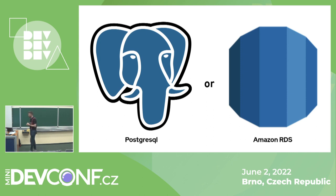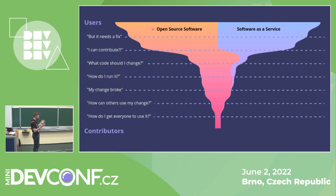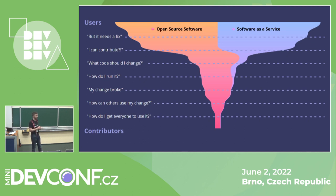This is a problem I'd like to contribute to solving. You can see the diagram here — with open source software, we slowly whittle down the number of participants each time. First you might notice the software is broken, then you figure out you can contribute, then figure out what code to change, how to run it, how to fix when your change breaks, how to contribute it to the project. Each time, there are fewer people who stay with it — that's why only a small fraction of users become contributors. But with software as a service, it's way harder and we lose everyone pretty much right away today.